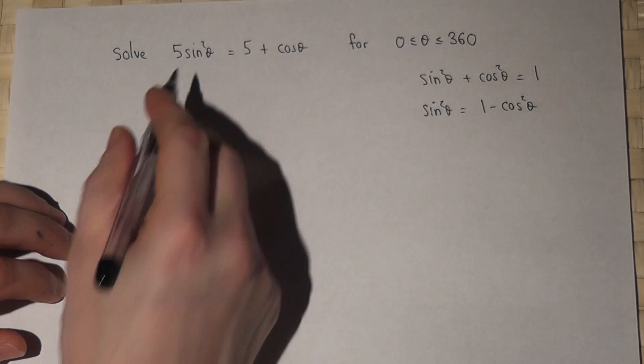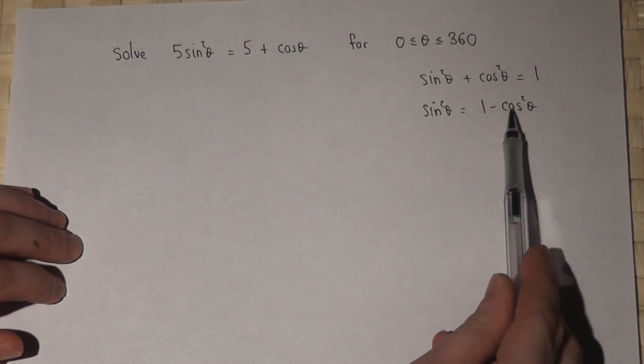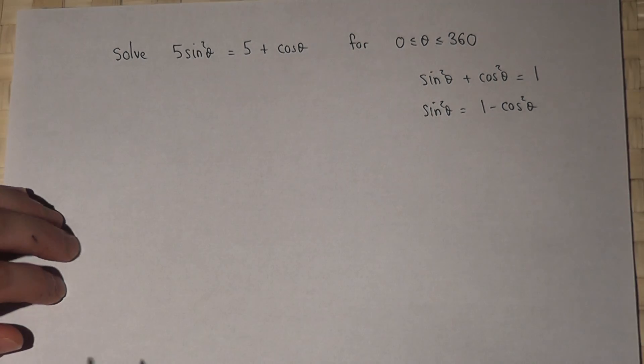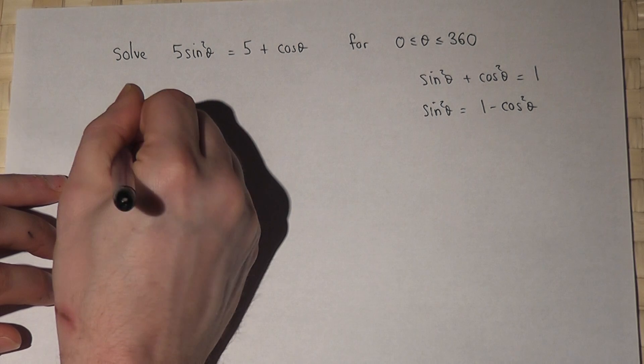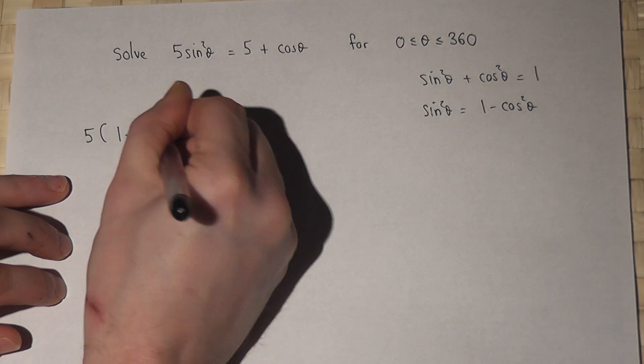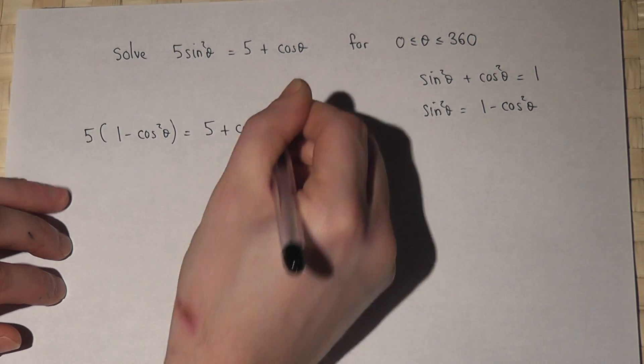So back to the equation. I can substitute in 1 minus cosine squared theta where we have sine squared theta. So 5 times 1 minus cosine squared theta equals 5 plus cosine theta.